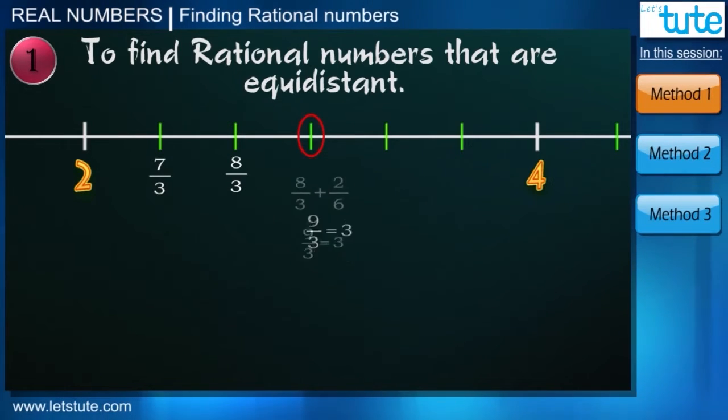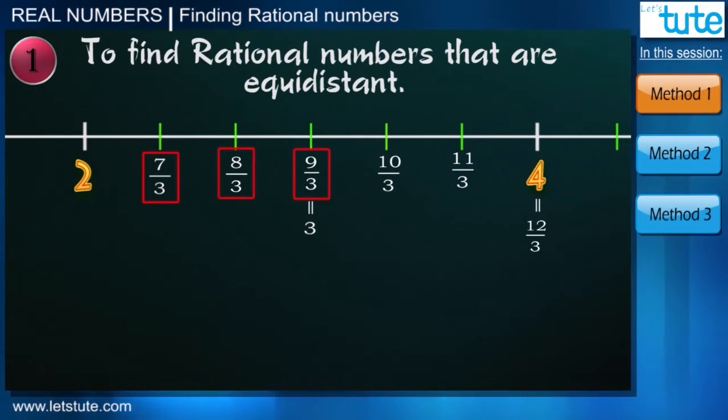Then 10 by 3. And at last 12 upon 3, that is 4. And these are the 5 rational numbers between 2 and 4 which are at equal distance.